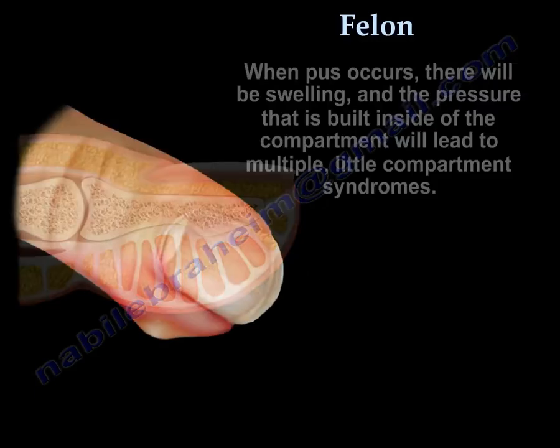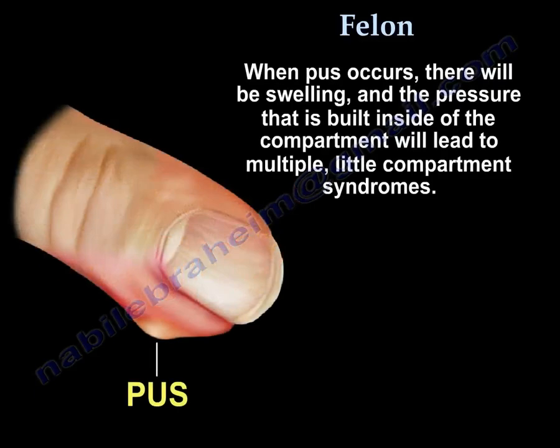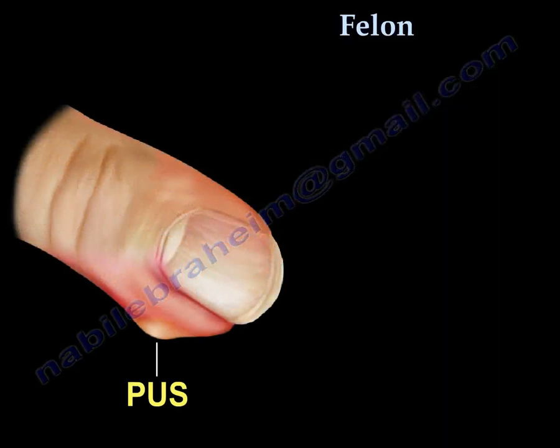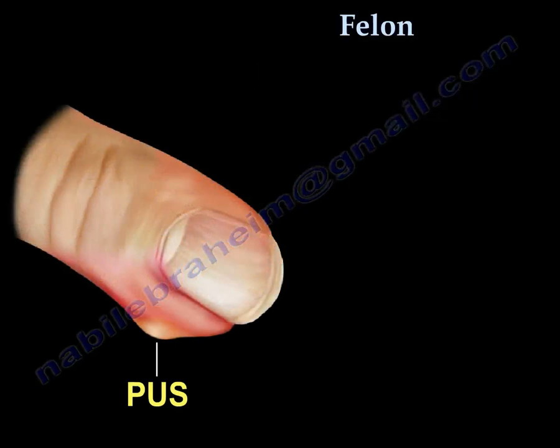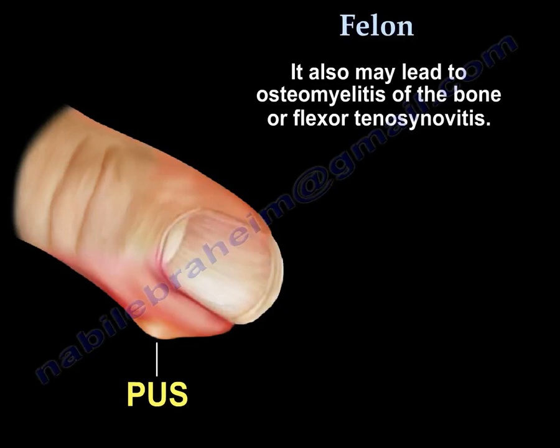When pus occurs, there will be swelling, and the pressure built inside the compartment will lead to multiple little compartment syndromes. That will lead to vascular compromise and necrosis of the tissue. It also may lead to osteomyelitis of the bone or flexor tenosynovitis.